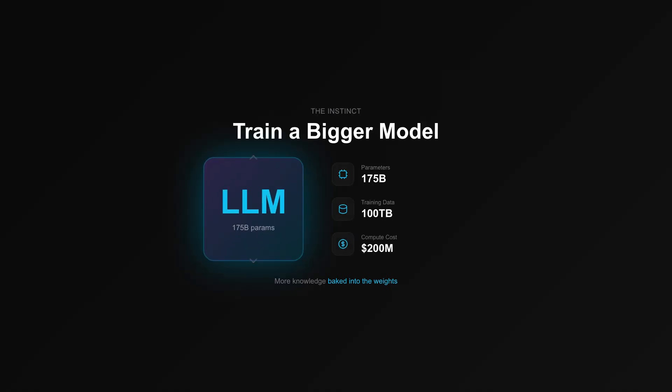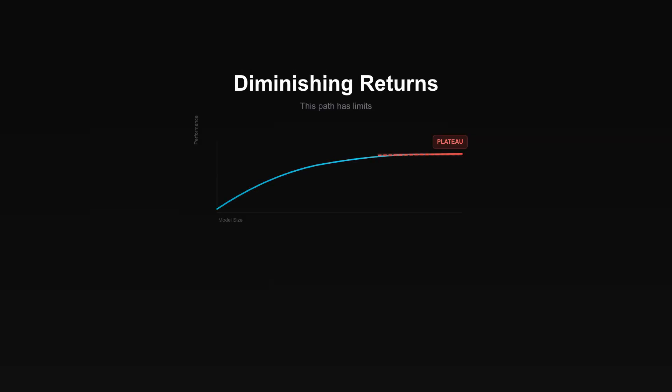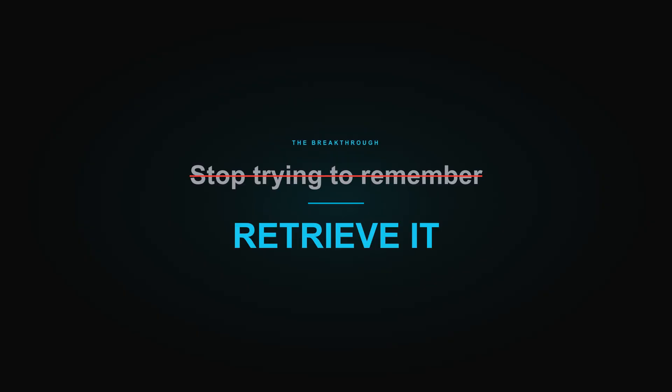The instinct is to train a bigger model — more parameters, more data, more knowledge baked into the weights. But this path has diminishing returns. You cannot memorize the entire internet. You cannot retrain every time information changes. The breakthrough insight? Stop trying to remember everything. Retrieve it instead.